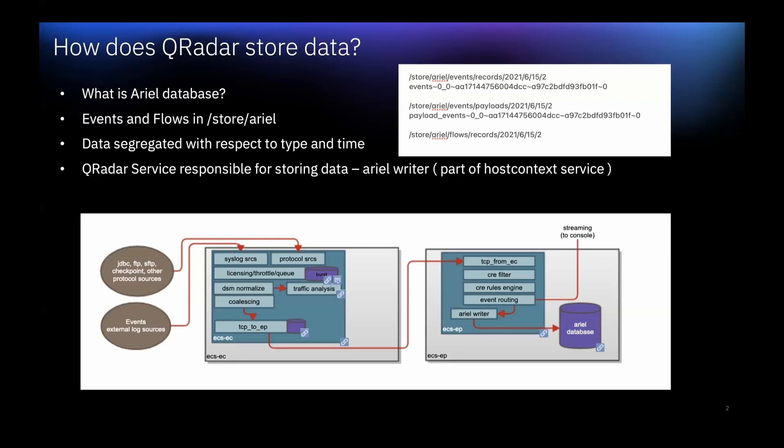After that, we have the Licensing component, which monitors the number of incoming events to the system to manage input queues and EPS licensing. Events exceeding the license limit will be sent to the burst queue. After that, we have the DSM Normalize component, which takes the raw data from the source device and parses the fields into a QRadar-usable format — in other words, it normalizes the raw data into a common structure.